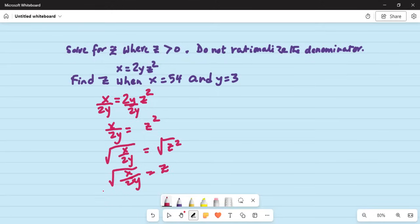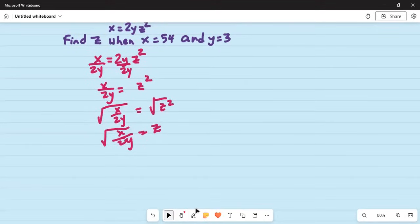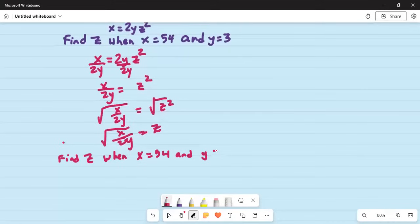Anyway, now we go back to the part B of the problem, which says find z when x is equal to 54 and y equal to 3. So, first we create some space. Find z when x is equal to 54 and y equal to 3. So, this is square root of x is 54 and y is 3, 2 multiplied by 3 and that is equal to z.